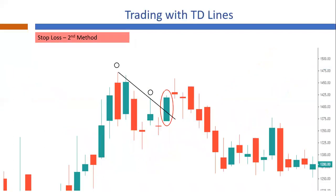In the second stop method, once an entry is made after a TD supply line breakout, we extend the TD supply line into the future. Stop-loss is triggered if price breaks below the TD supply line. Mr. DeMark suggested that stops trigger if the opening of the day after the breakout is a gap down below the TD supply line, or if the close of the day after the breakout is below the TD supply line. However, a slight modification is recommended since this is not always the case.